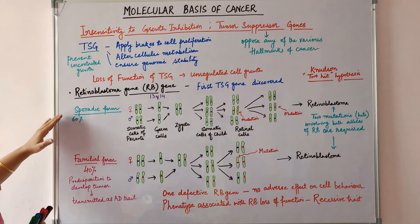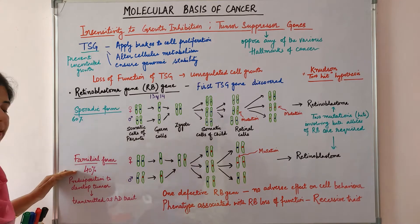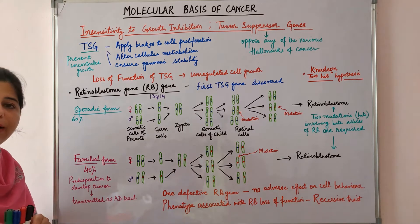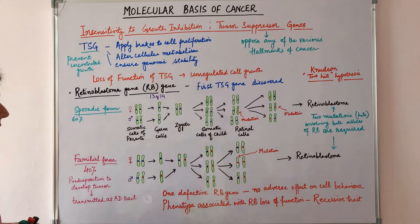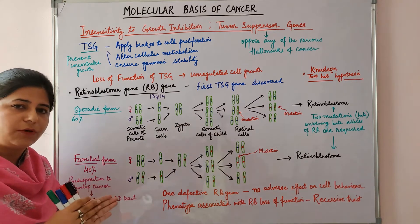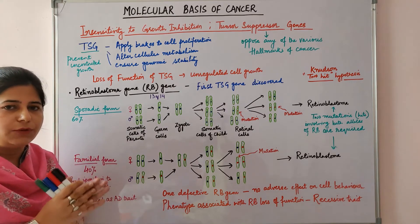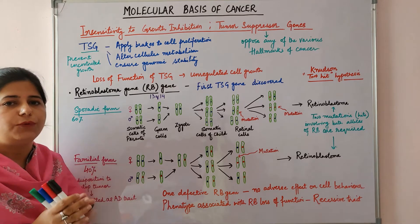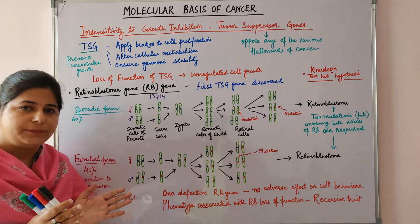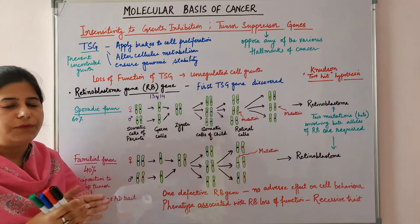Retinoblastoma occurs in two forms: sporadic form and familial form. 40% of retinoblastomas are familial and the predisposition to develop tumor is transmitted as an autosomal dominant trait. The carriers are those who have one copy of the defective RB gene and one normal copy. Carriers are phenotypically normal but have a 10,000-fold increased risk of developing retinoblastoma in both eyes, and are also at increased risk of developing osteosarcoma and various other soft tissue sarcomas.